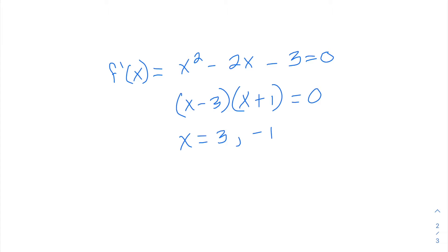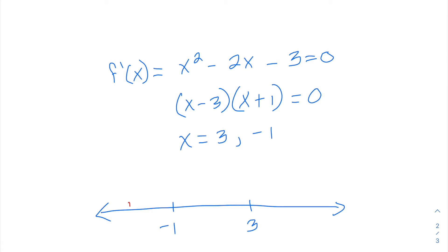With those critical points — as a reminder from our finding extrema section, feel free to check out our other videos — you put those points on a number line and check values in between and outside of those points. To find out if these are minimum or maximum values, we check a point to the left of negative 1, between negative 1 and 3, and to the right of 3. We don't care about the numerical result, just whether it's positive or negative — we're looking for the sign.